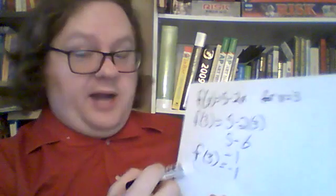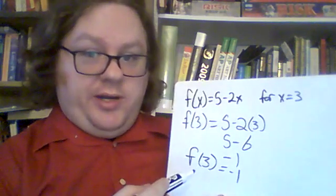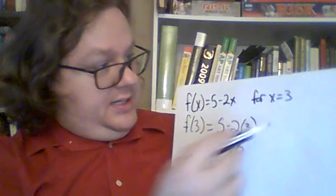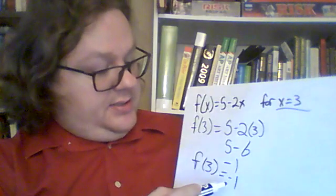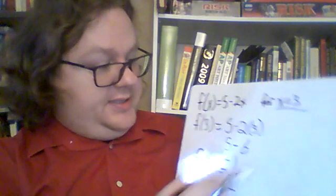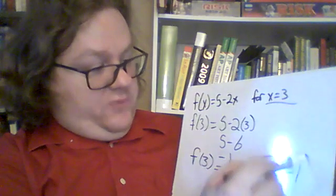Now how does that translate into a point on a graph? Well if the x equals 3 then that means the other one, the y is negative 1. So there's 3, negative 1.